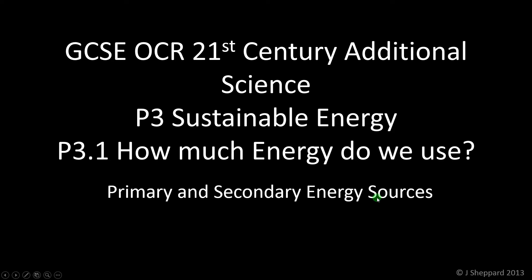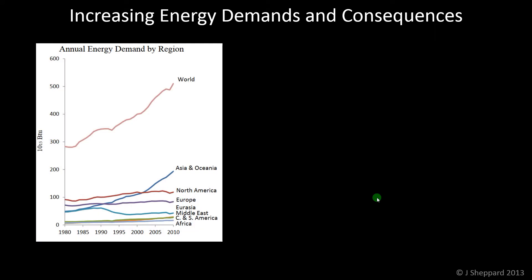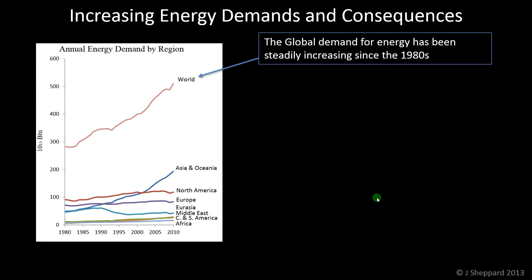This P3 revision video is about sustainable energy and primary and secondary energy sources. The first thing to note is that this whole topic takes place in the context of the fact that the energy demands of the entire planet are increasing all the time. This graph shows the energy demand by region, so the top line is the entire world and then the continents basically along the bottom. You can see that the line for the energy demand for the world is going up.